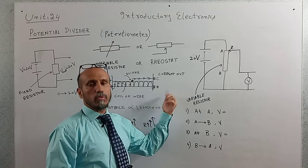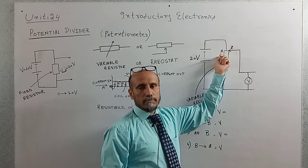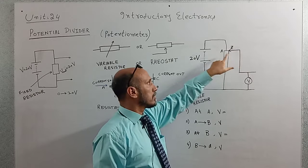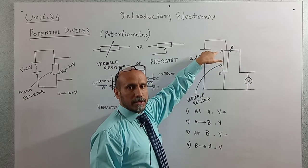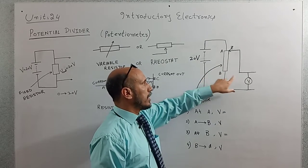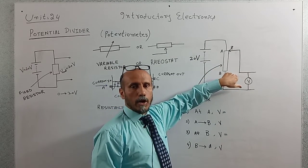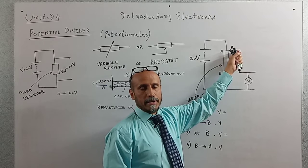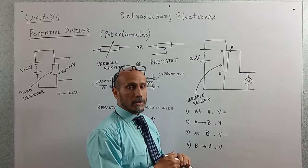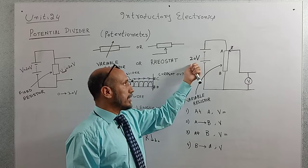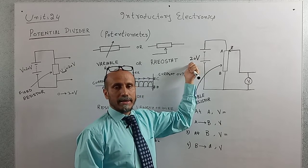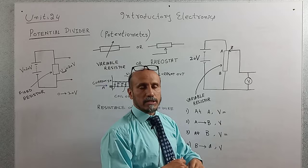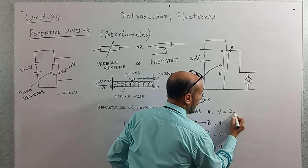Now let's see how the potential divider actually works. There is a sliding contact Z, and two points on the resistor: point A and point B. A voltmeter is connected at the output. When the slider is at point A, the resistance is maximum, so the voltage will also be maximum. Since the battery provides 20 volts, when the slider is at point A, the voltage is 20 volts.